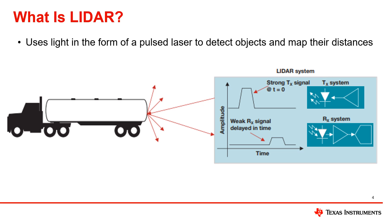I will begin by explaining what LiDAR is. LiDAR stands for Light Detection and Ranging. LiDAR operates by using light in the form of a pulse laser to detect objects and map their distances, which is why it is sometimes referred to as time of flight. There is a transmission system that sends out a short high-current light pulse. This pulse will bounce off of objects and eventually return to a receiver. The time between the signal leaving and returning can then be used to calculate the distance the pulse traveled. You will be able to get more accurate results for moving objects the faster you are able to transmit signals.